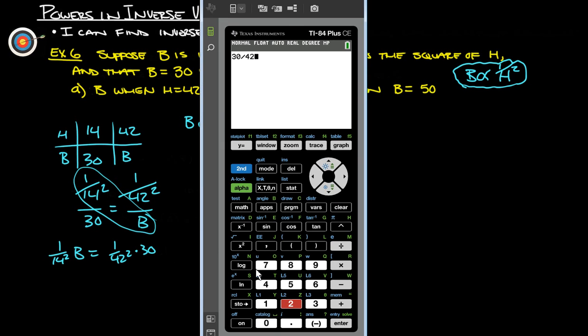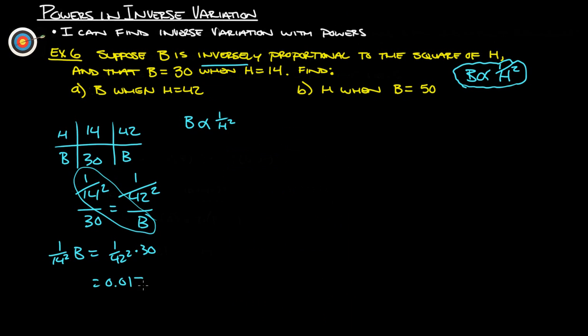We can write it down, but we're going to want to use this information. You want to leave that number in the calculator. Don't clear that out because we can use that here in the future. So we've got 0.017, we'll just write that, 0.017, and that's equal to 1 over 14 squared times B.